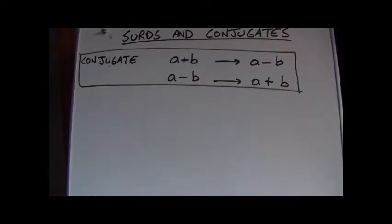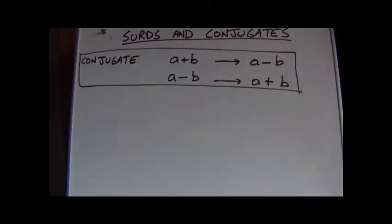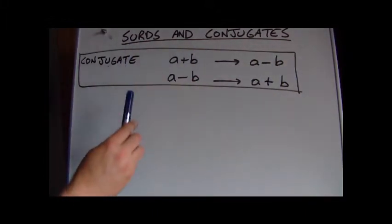If we have an expression with two terms, for example if we've got a plus b, the conjugate of that is simply changing the plus to a minus within that term. So a minus b is the conjugate of a plus b.